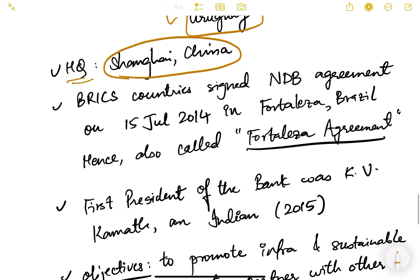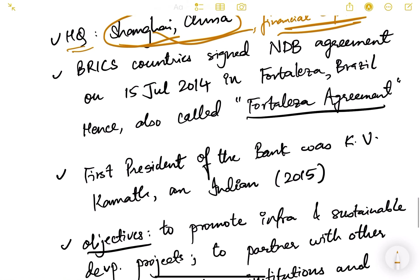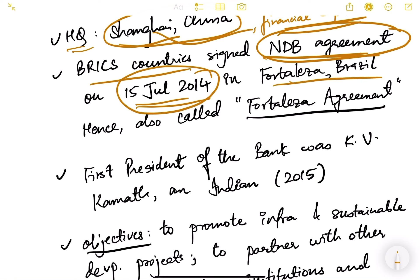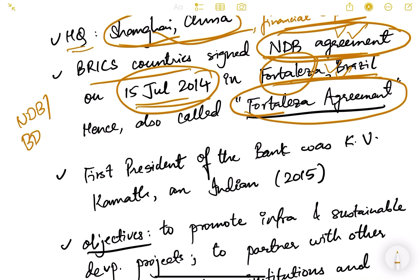The headquarter of the New Development Bank is in Shanghai, China. Shanghai is the financial capital of China, just like Mumbai is the financial capital of India. The BRICS countries signed the NDB agreement on 15th July 2014 in Fortaleza, Brazil, during a BRICS meeting. That is why it is also known as the Fortaleza Agreement — this term can come up in MCQs.